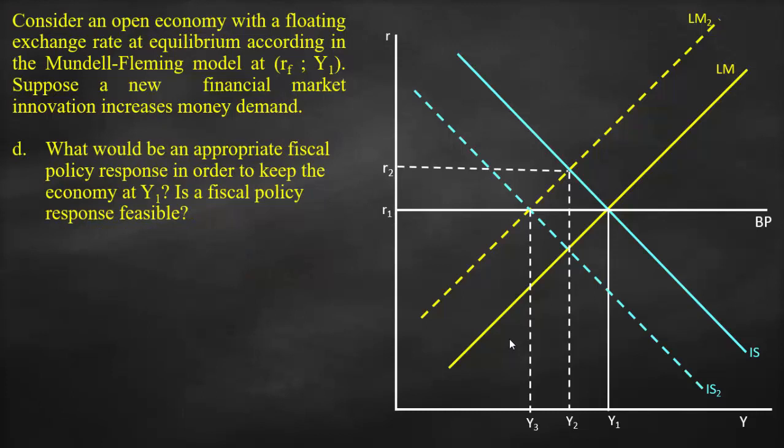The next part of the question, what would be an appropriate fiscal policy response in order to keep the economy at Y1? So we said our initial shock, it affected LM. Therefore, when we talk about fiscal policy, we refer to higher G or lower taxes, which means it will affect IS curve.